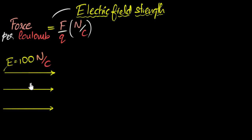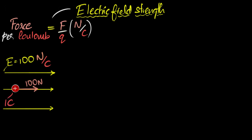What is the meaning of this statement according to this definition? Well, it basically means that if I keep a coulomb of charge in that electric field anywhere — it's uniform — then that coulomb would experience 100 newtons of force, 100 newtons per coulomb.